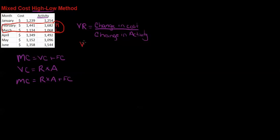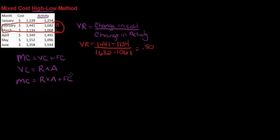Now I can take these two months and plug them into my formula. Variable rate equals the change in cost — so that's 1441 (high point) minus 1134 (low point) — divided by the change in activity, which is 1682 minus 1068. If you simplify that and do the calculation, you get 50 cents. So my rate is 50 cents.